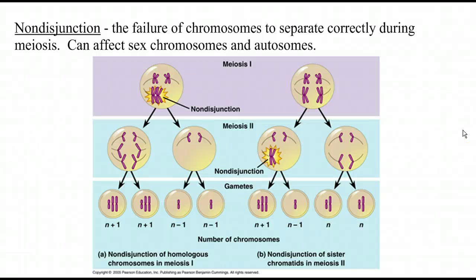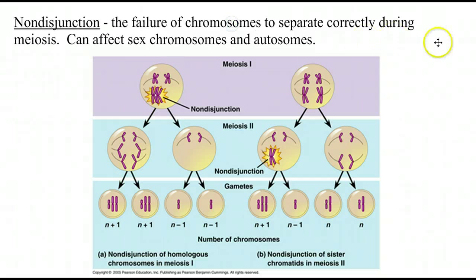Alright, this is the last recording from chapter 13. Just a few odds and ends here which are still kind of interesting, at least to somebody like me. We have the process here called nondisjunction. Nondisjunction occurs when there's a mistake in meiosis so that the chromosomes don't separate when they're supposed to.